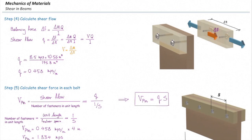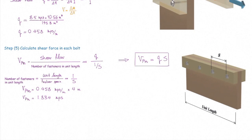The spacing is the same, so the unit length divided by spacing gives the same count per length, but we know that in one cross-section we see two bolts. To make the equation more accurate, I introduce a new parameter M, which represents the number of fasteners in one cross-section that connect that piece to the rest. The general equation becomes V_pin = qS / M.